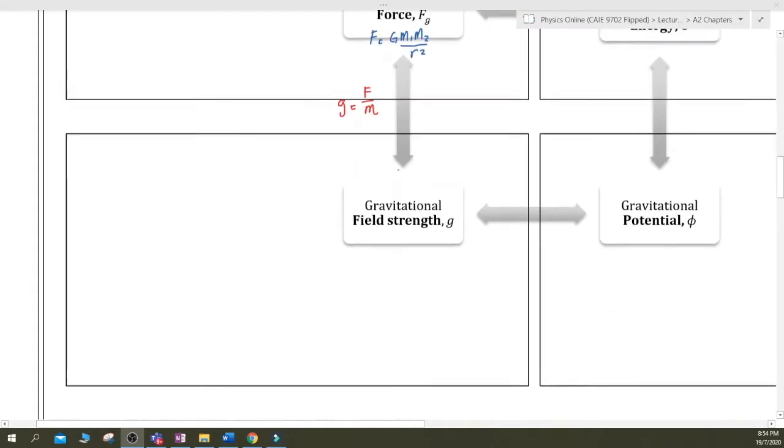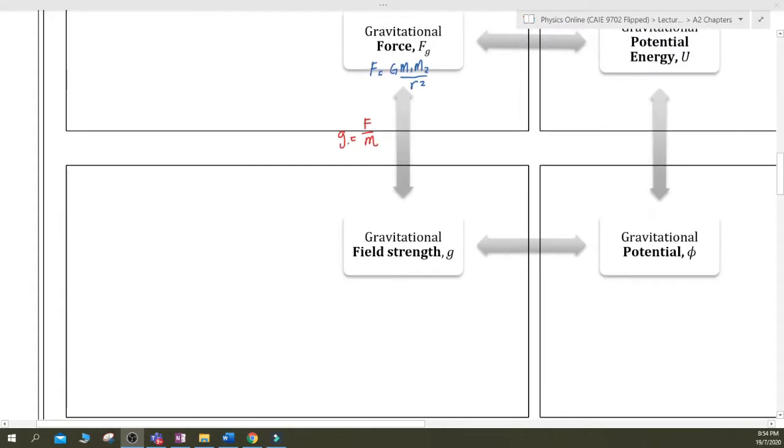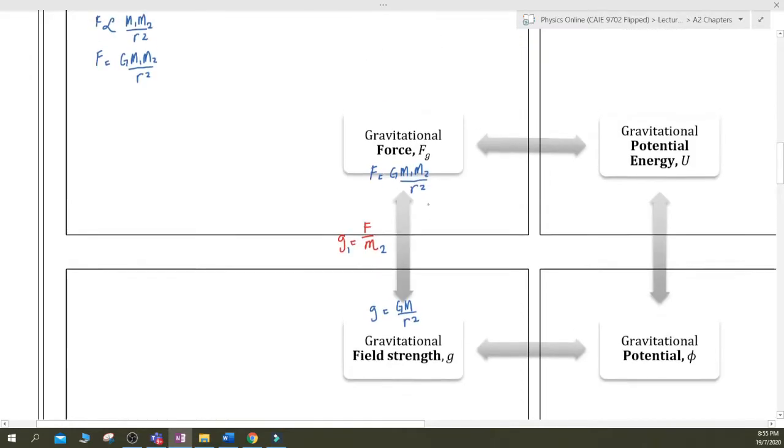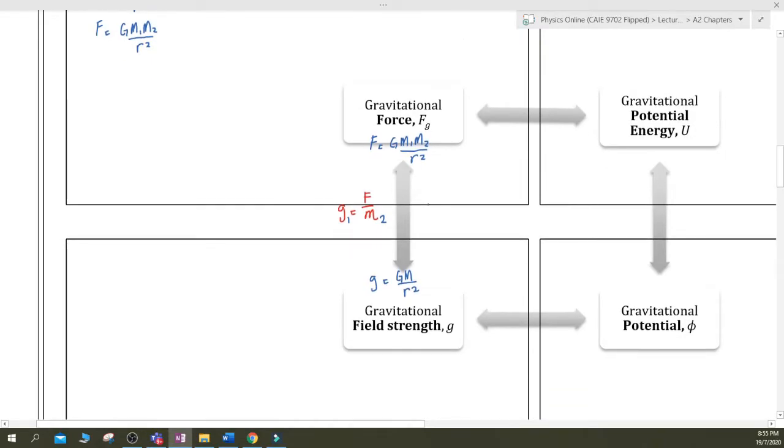And because they are both vectors, you should always think about direction, especially if there are two planets or two satellites, because that will actually influence the way you think about the values.